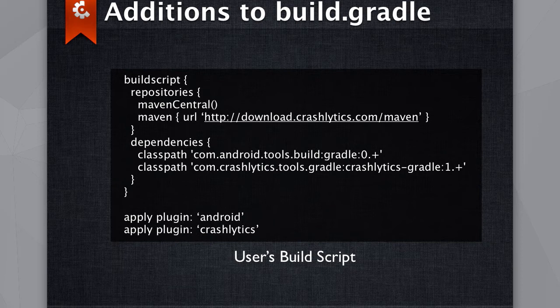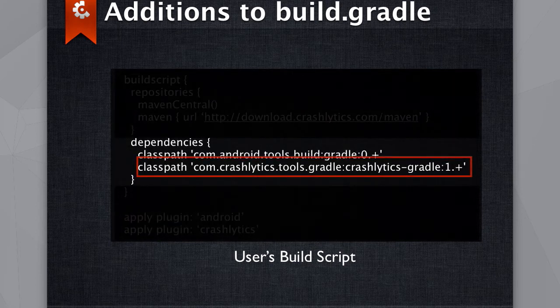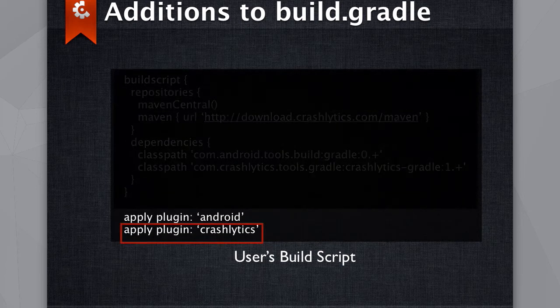To add your plugin: first you add your repository — you don't need this if you're publishing to Maven Central, but if you have your own Maven repository, you add it to the user's build script. Then you add the dependency for your plugin, and you can specify an open-ended version range or a specific version. Finally, you apply your plugin. In our case, we apply Crashlytics after the Android plugin because we want to cooperate with it.